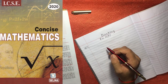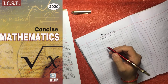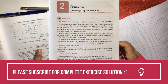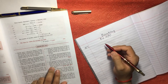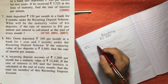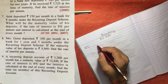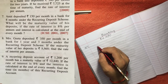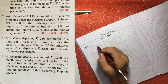We are going to see Concise Mathematics, Banking chapter, Exercise 2A, Question number 7. The question says: amount deposited is ₹150 per month in a bank for eight months under the recurring deposit scheme. So there is an account called recurring deposit and the person Mr. Amit is paying ₹150 per month.